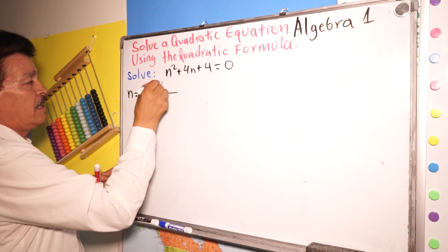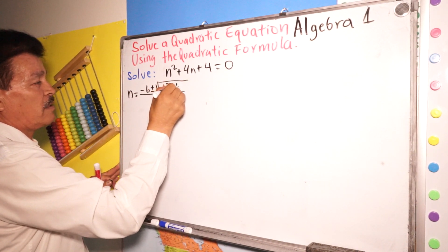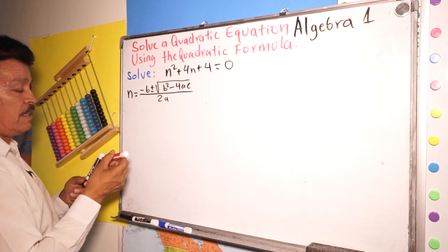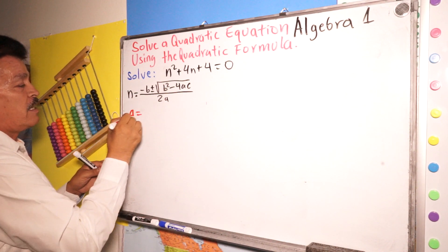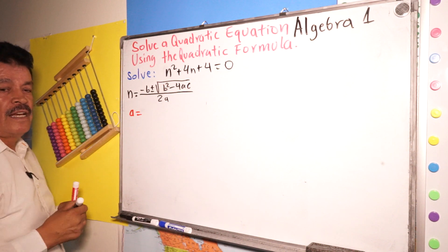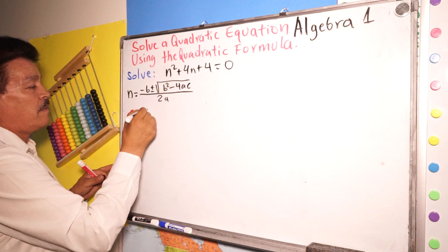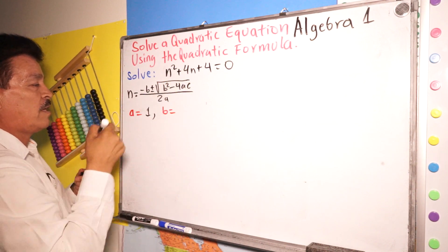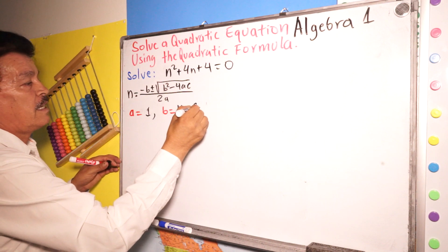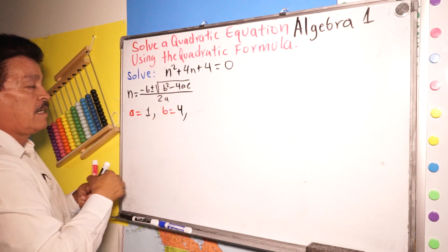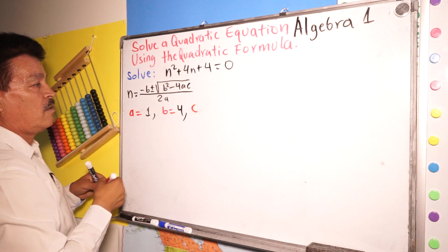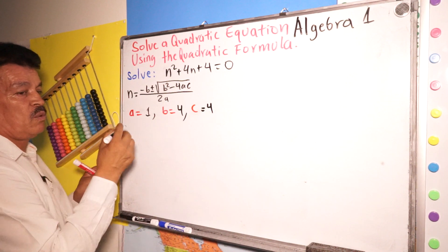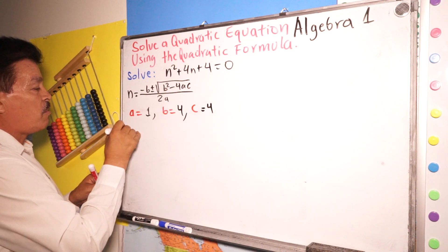The formula is: n equals negative b plus or minus the square root of b squared minus 4ac, divided by 2a. Now substitute. In this case a equals 1, b equals 4, and c equals 4.